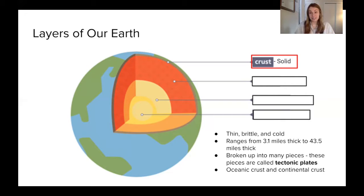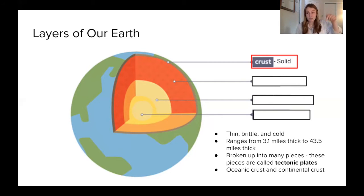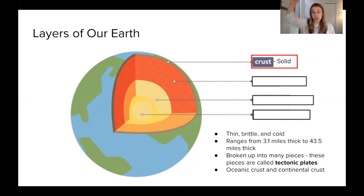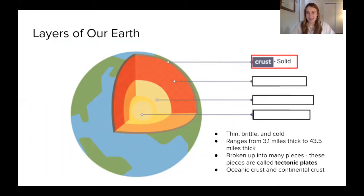The crust has a lot of variability in its thickness. It can be 3.1 miles thick in some places, but it can also be as thick as 43.5 miles. If you swim to the bottom of the ocean, there's still rock at the bottom — that's part of our crust. But if you were standing on top of Mount Everest and had to go through the crust to get to the next layer, that's where you might see places much thicker. That crust is actually broken up into many, many pieces, which can also be called tectonic plates.